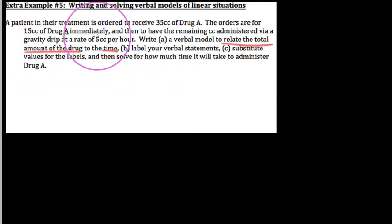So we want to relate the amount of the drug to time. Let's go ahead and get started and consider what we already know here. They're ordered to receive a total of 35 cc's of drug A, but they're ordered to get 15 up front, and then to have the remaining cc's administered at a gravity drip rate of 5 cc's per hour.